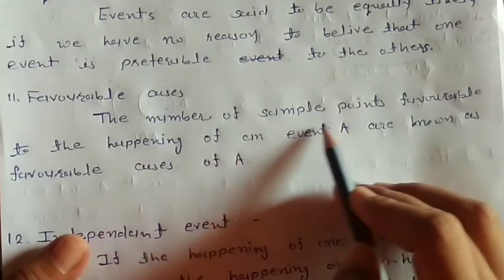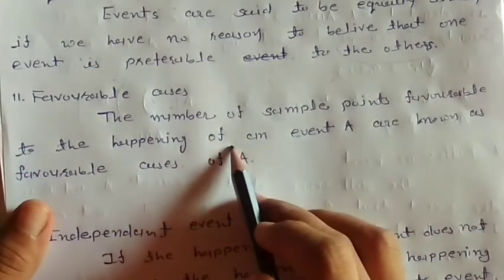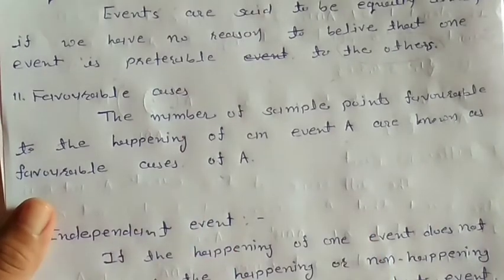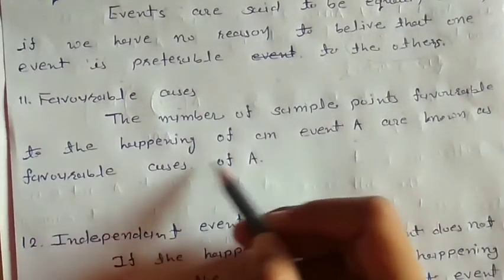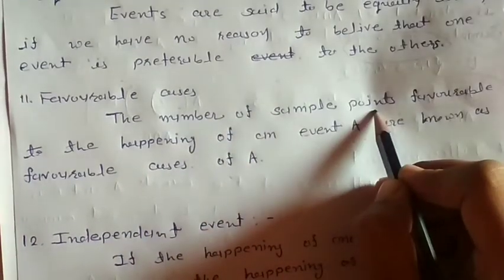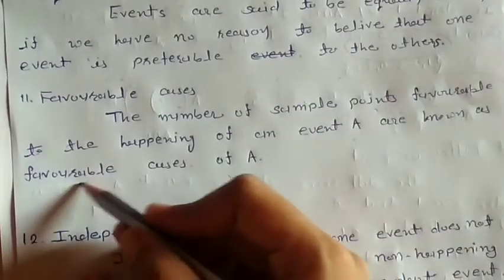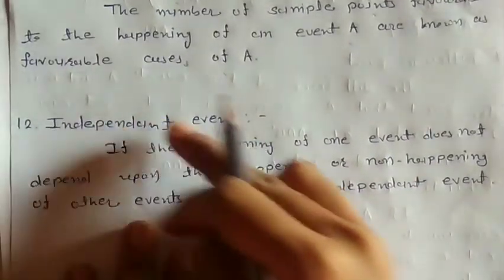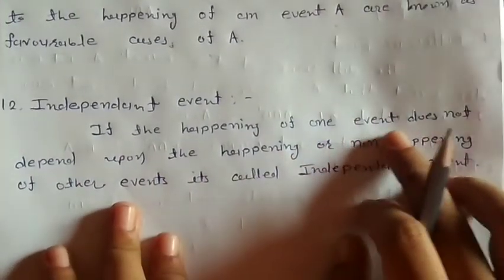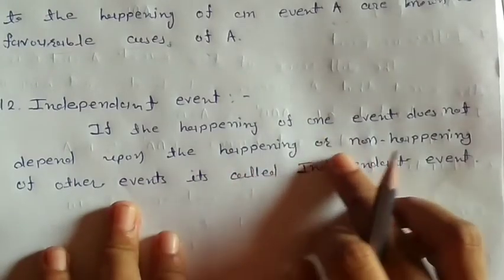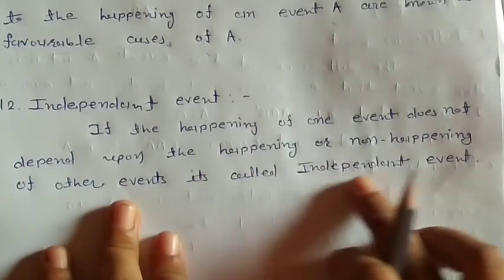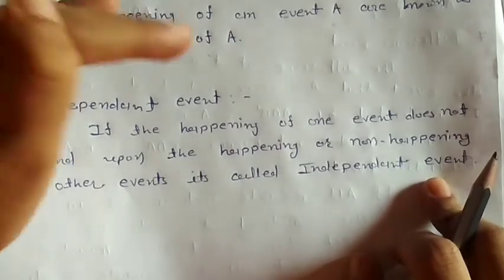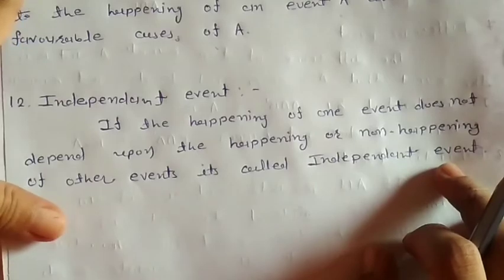Number 11: Favorable Cases. The number of sample points favorable to the happening of event A are known as the favorable cases of A. That is, how many sample points are needed for event A to happen — those are the favorable cases. Number 12: Independent Event. If the happening of one event does not depend upon the happening or non-happening of other events, it is called an independent event. That means one event does not depend on the other events.